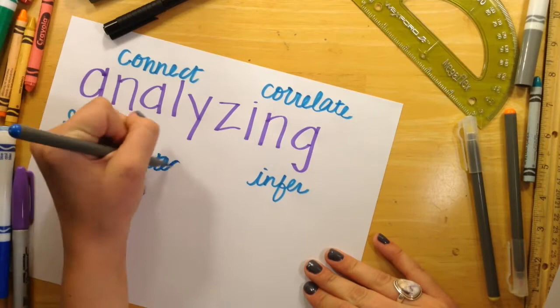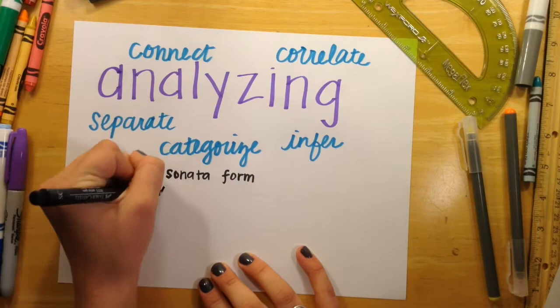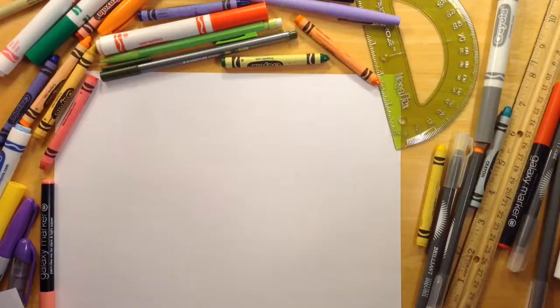The next domain we researched was analyzing. Music students can show that they have mastered analyzing through examining music. For example, analyzing the form of a piece, participating in guided listening, and distinguishing between same versus different.